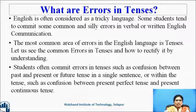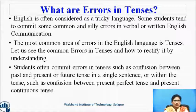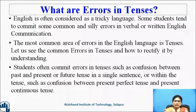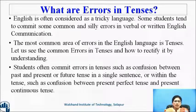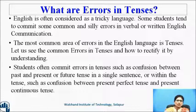English is often considered a tricky language. Some students tend to commit common and silly errors in verbal or written English communication. The most common area of errors in the English language is tenses. Let us see the common errors in tenses and how to rectify them. Students often commit errors such as confusion between past, present, or future tense in a single sentence, or confusion within a tense such as between present perfect tense and present continuous tense.